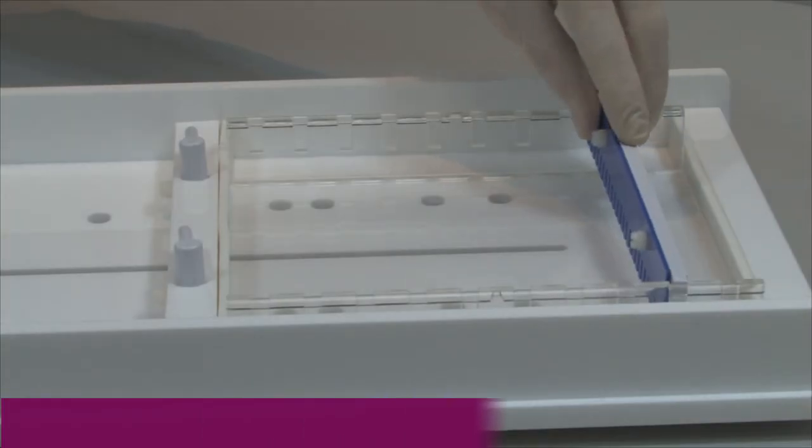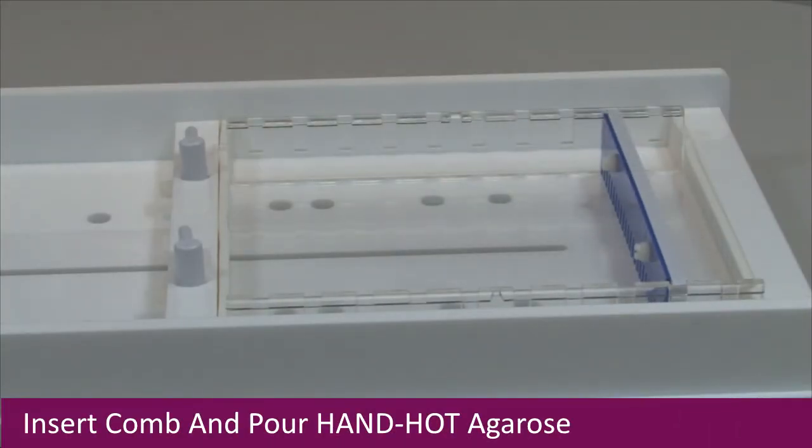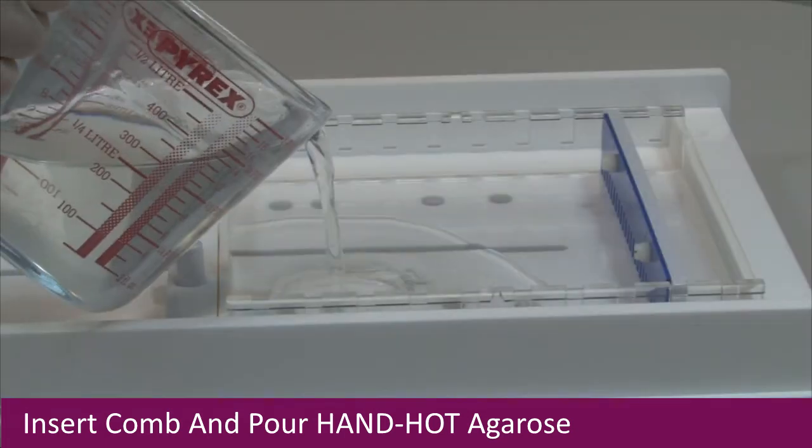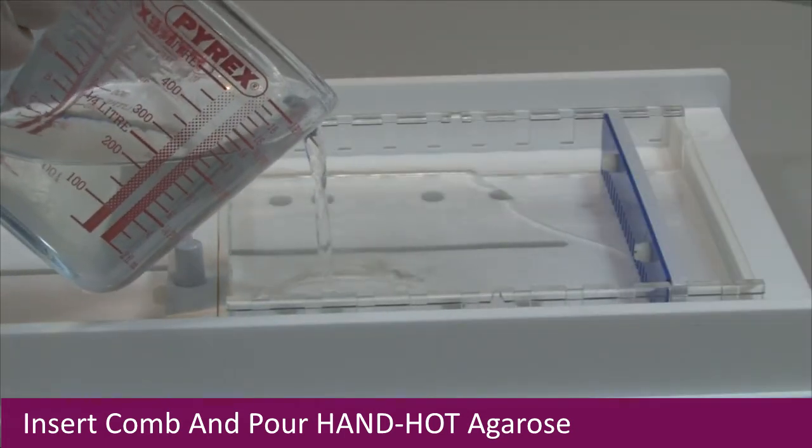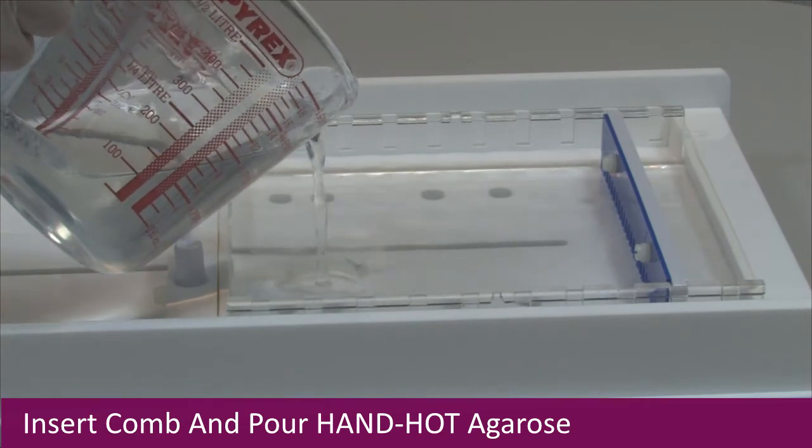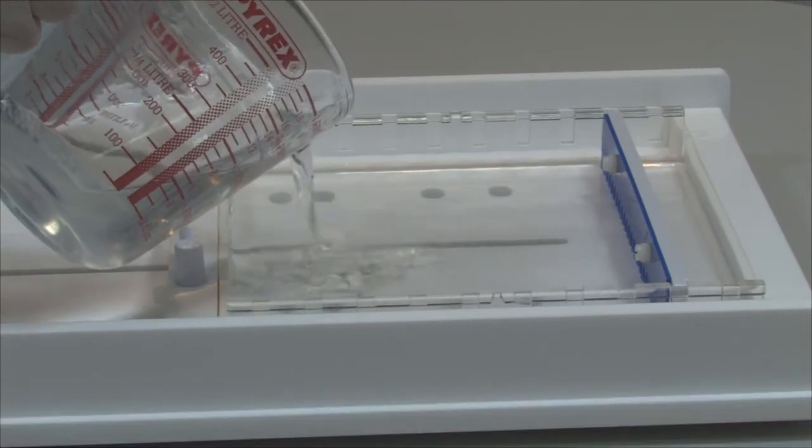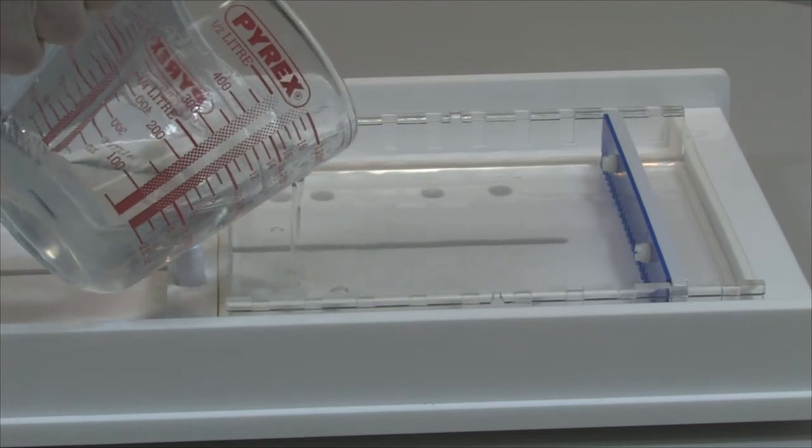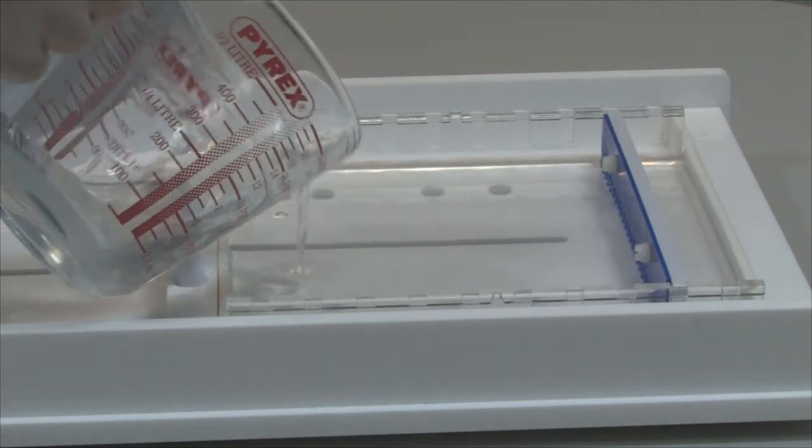Once satisfied that the caster is leak-proof, insert the combs within the desired positions within the tray and gently pour in the agarose to approximately 2 mm of the top of the comb teeth and leave to set. Once set, remove the comb and place in the appropriate multi-sub gel tank.